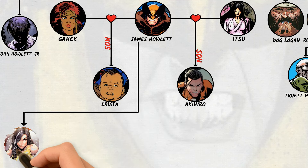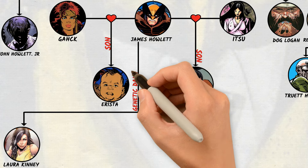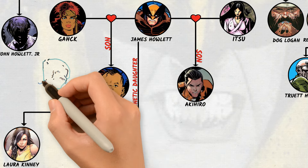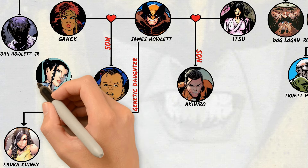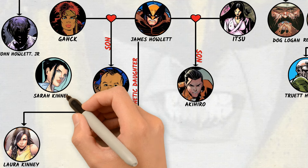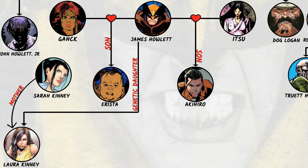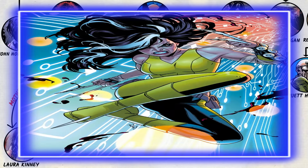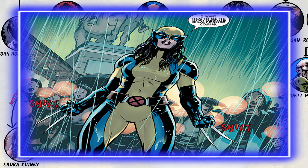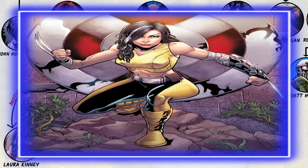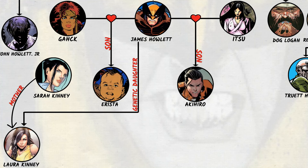Laura Kinney, also known as Talon, is a mutant developed by the facility from Wolverine's DNA to serve as their personal assassin. Sarah Kinney, a geneticist, was entrusted with leading the study and proposed creating a female subject after 22 failed attempts owing to a defective Y chromosome in the genetic material. Contrary to her superior's wishes, Kinney combined her own genetic material with Wolverine's to become the experiment's surrogate mother, giving birth to X-23.